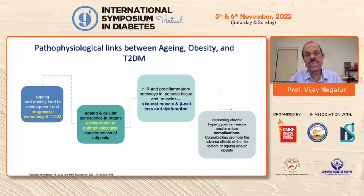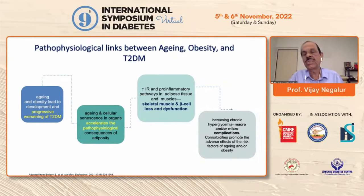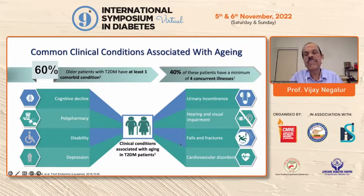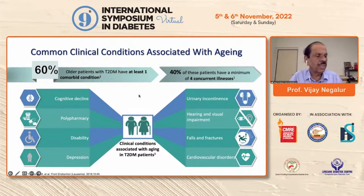Aging itself, along with obesity, leads to progressive worsening of type 2 diabetes due to cellular senescence in the pancreas and other organs, which accelerates the pathophysiological consequences of adiposity and increased insulin resistance. Pro-inflammatory pathways in adipose tissue and muscle result in decreased skeletal muscle mass and decreased beta cell function, increasing chronic hyperglycemia and macro- and microvascular complications. Around 60% of the elderly population have at least one comorbid condition, such as cognitive decline, polypharmacy, disability, depression, hearing and visual impairment, falls and fractures, and cardiovascular disorders.